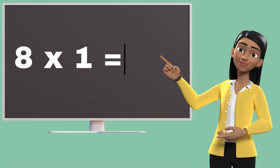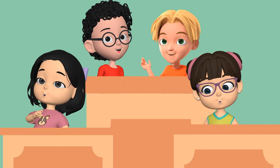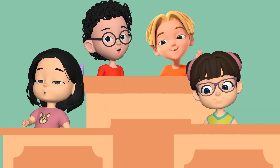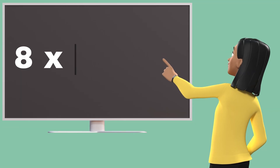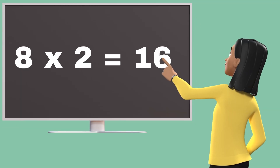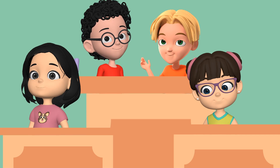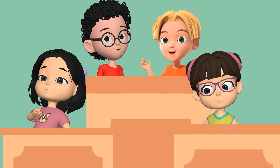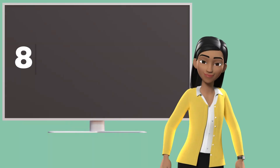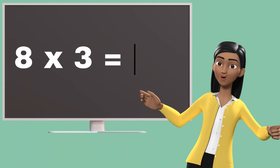Eight ones are eight. Eight ones are eight. Eight twos are sixteen. Eight twos are sixteen. Eight threes are twenty-four.